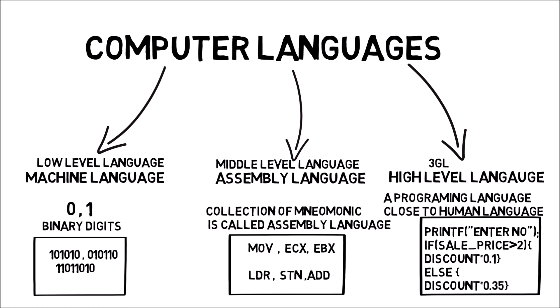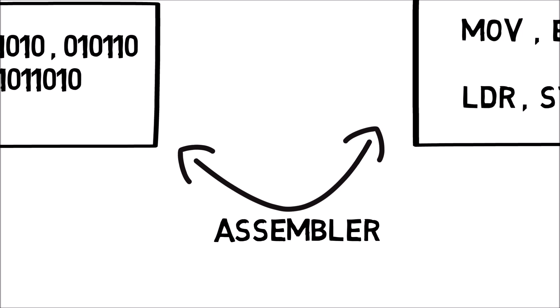Now we have talked about machine language, and we have developed assembly language. But how does assembly language — like ADD or MOVE — get understood by the computer? We have created software called an Assembler. The assembler is simple by definition: it is a software or translator that converts assembly language to machine language. For example, in binary 1010, given to the computer, it gets converted by the assembler into assembly language. And if we give assembly language, it converts it back to machine language so the machine can understand. It is like translating between Hindi and English.